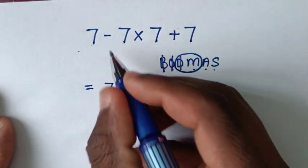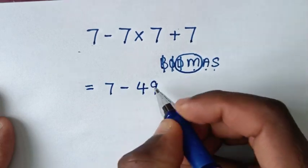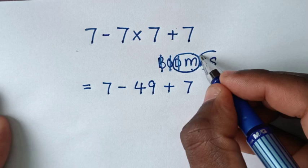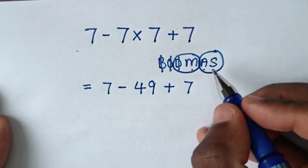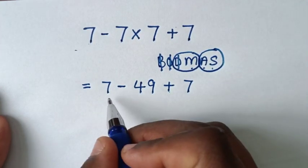to 7 minus - 7 times 7 is 49 - plus 7. So we have 7 minus 49 plus 7. Then we'll work with the addition and subtraction group. For addition and subtraction, we work from left to right.